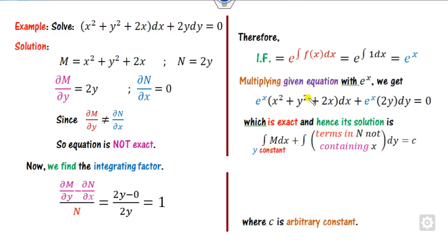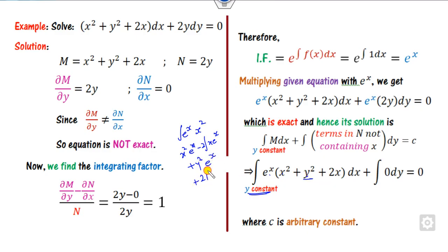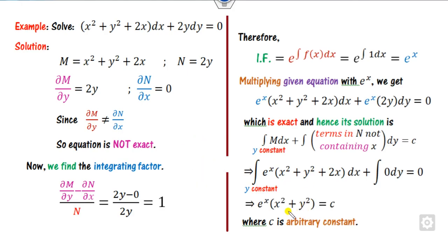Now that it is exact, find the solution. For the new N, there are no terms not containing x, so that part is 0. For M, keeping y as a constant, integrate e raised to power x squared. The result is y squared outside, giving e raised to power x plus 2x e raised to power x dx. These terms cancel out, and the answer is x e raised to x squared plus y squared e to the x.